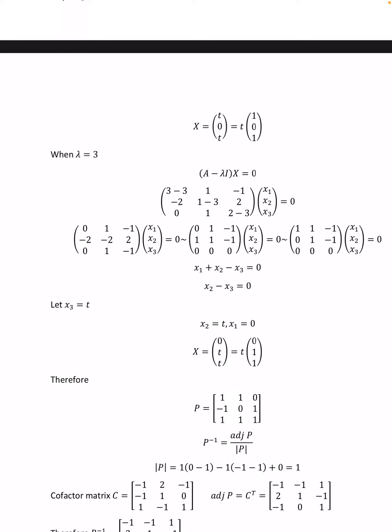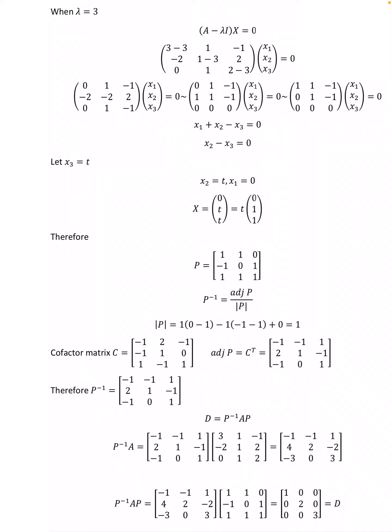When λ = 3, (A − λI)x = 0 gives [[0, 1, −1], [−2, −2, 2], [0, 1, −1]] [x1, x2, x3]ᵀ = 0, which reduces to [[1, 1, −1], [0, 1, −1], [0, 0, 0]] [x1, x2, x3]ᵀ = 0. That is x1 + x2 − x3 = 0 and x2 − x3 = 0. Let x3 = t, then x2 = t, x1 = 0. Therefore X = t(0, 1, 1). Hence P = [[1, 1, 0], [−1, 0, 1], [1, 1, 1]].